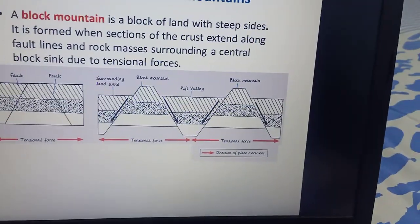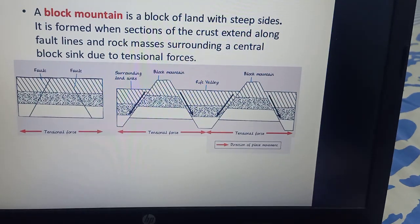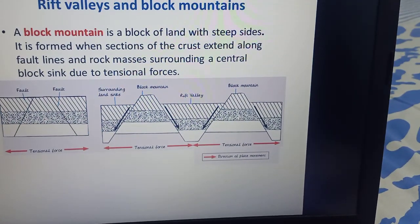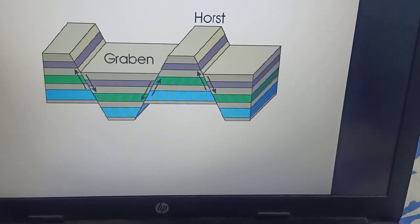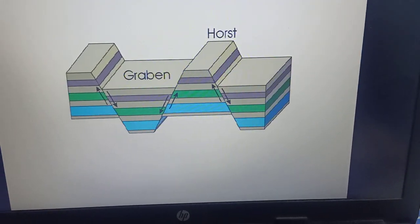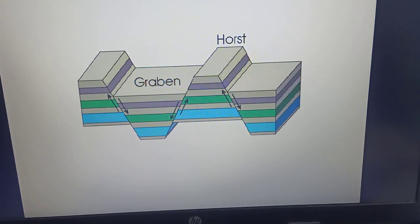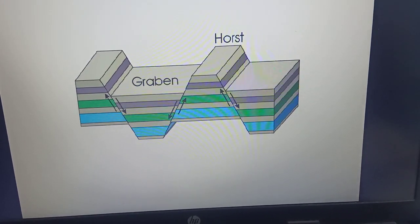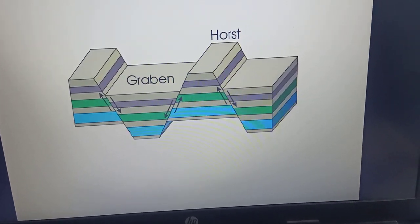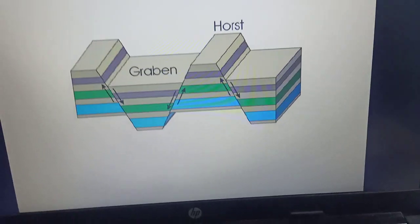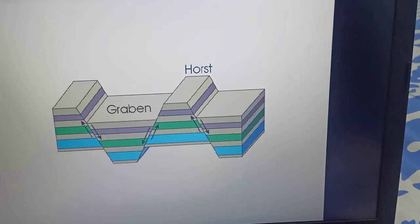These block mountains are separated by the intervening valleys which are also referred to as the graben. Examples of block mountains are the Vosages and the Black Forest Mountains. The best example of a rift valley is the African rift valley.